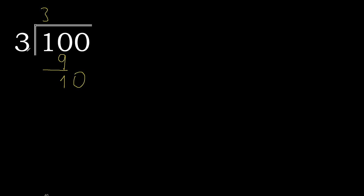Bring down 10. 3 multiplied by 4 is greater, 3 multiplied by 3 is 9 — subtract, remainder is 1. There is no more digit, so complete — always complete with 0.